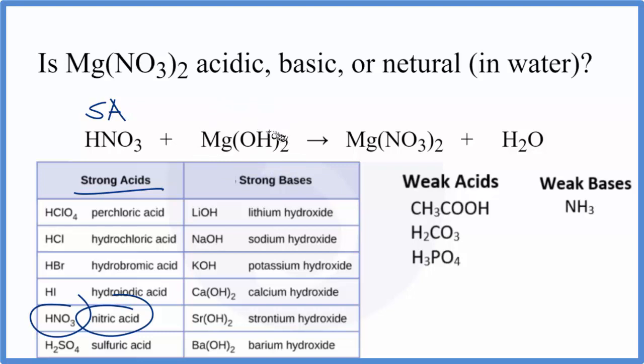For Mg(OH)₂, the magnesium hydroxide, it's not on our list of strong bases, and it's not on our list of weak bases. In general, this is considered to be a strong base, but it only dissolves a little bit.